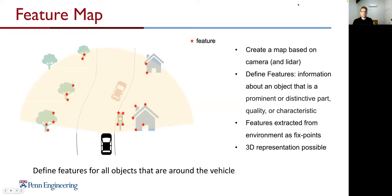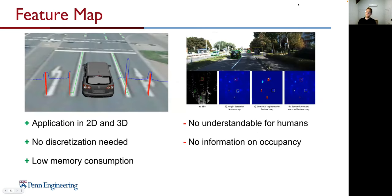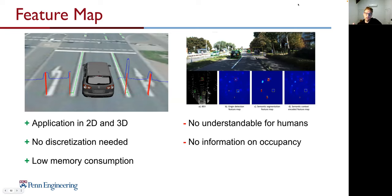Number three is a feature map. We define features for all objects around the vehicle, creating a map based on camera and maybe LiDAR. Features are prominent or distinctive parts of objects extracted as fixed points, allowing 3D representations. Examples include a line representing a feature, or features detected by the car that humans can't even perceive. We don't have occupancy information — only features — but the advantage is low memory consumption, applicable in both 2D and 3D.